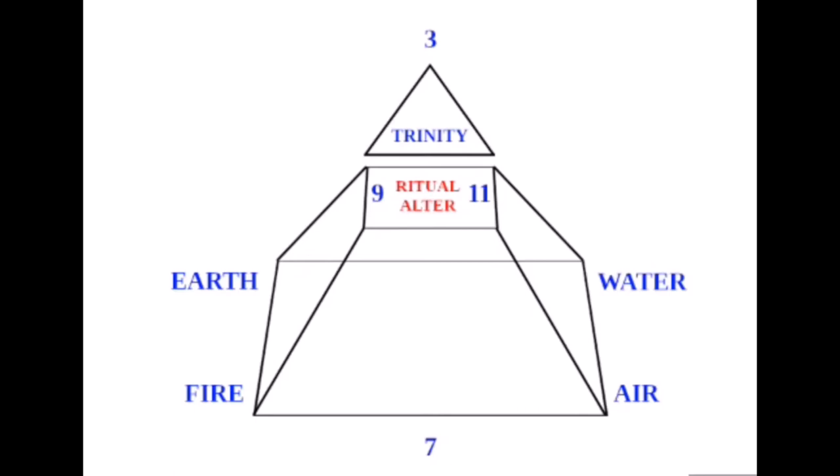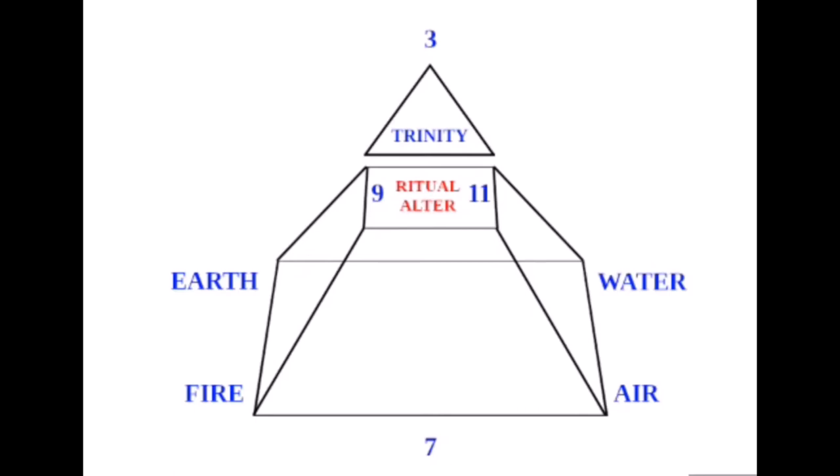The familiar Masonic figure of the point within a circle is a symbol of the union between Ra, Osiris, and Isis. The point represents Osiris's phallus in the center of the circle or womb of Isis, which in turn is enlivened by the sun rays from Ra.